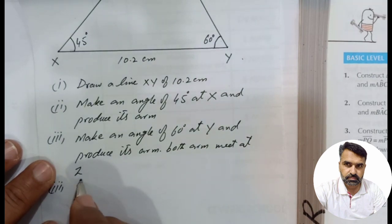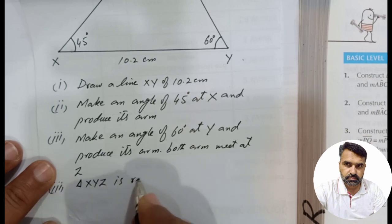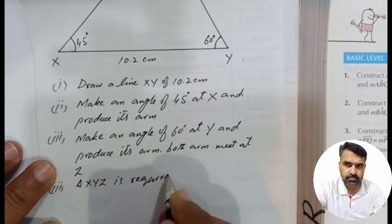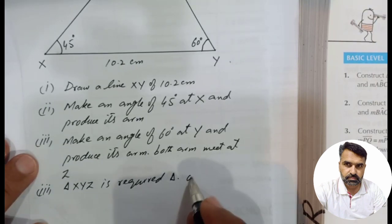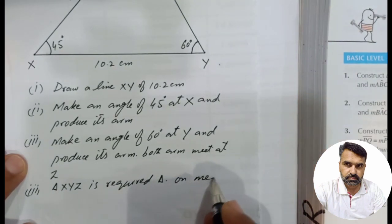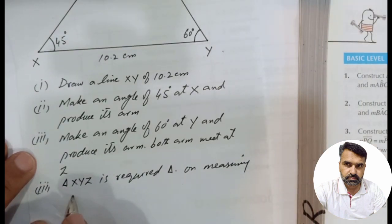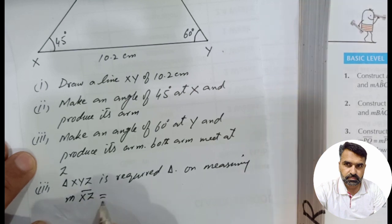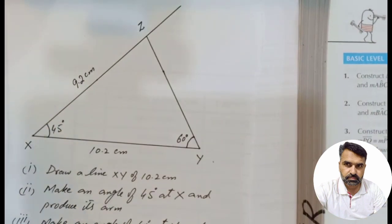Triangle XYZ is the required triangle. On measuring XZ, the measurement of XZ is equal to 9.2 cm. So this is the solution to question number 5.